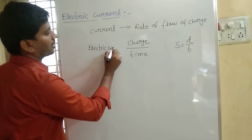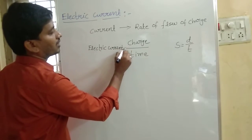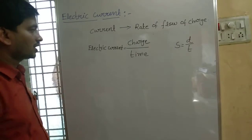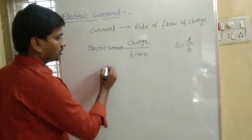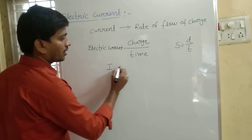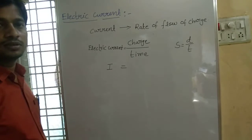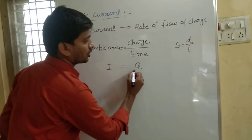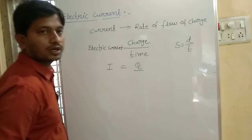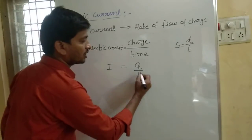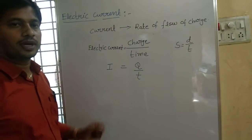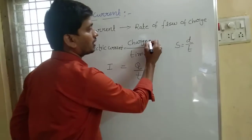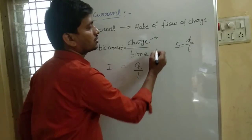Electric current is nothing but charge upon time. Electric current is denoted by I. Charge is represented with letter Q, and time with letter T. What is the SI unit of charge? The SI unit of charge is Coulombs.